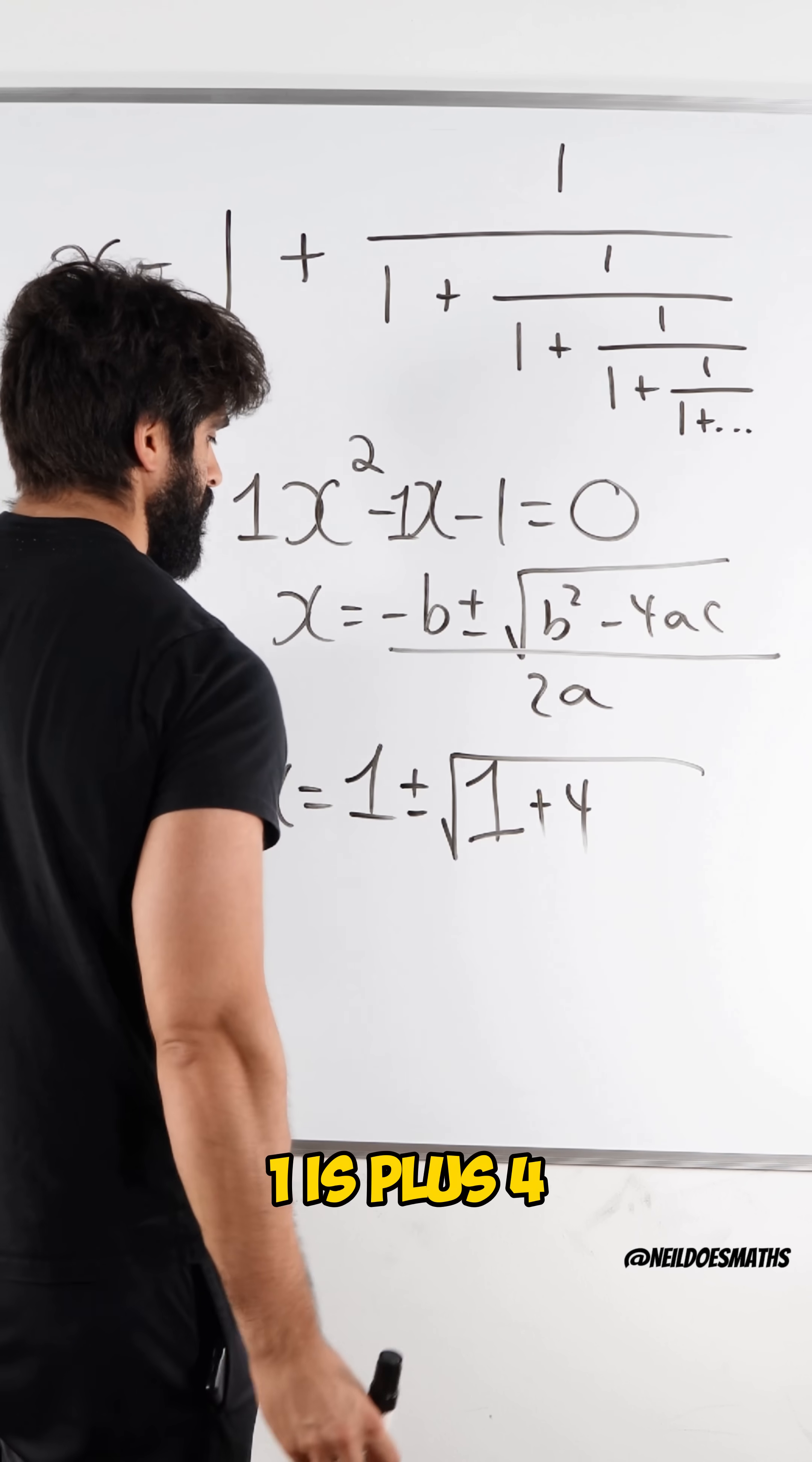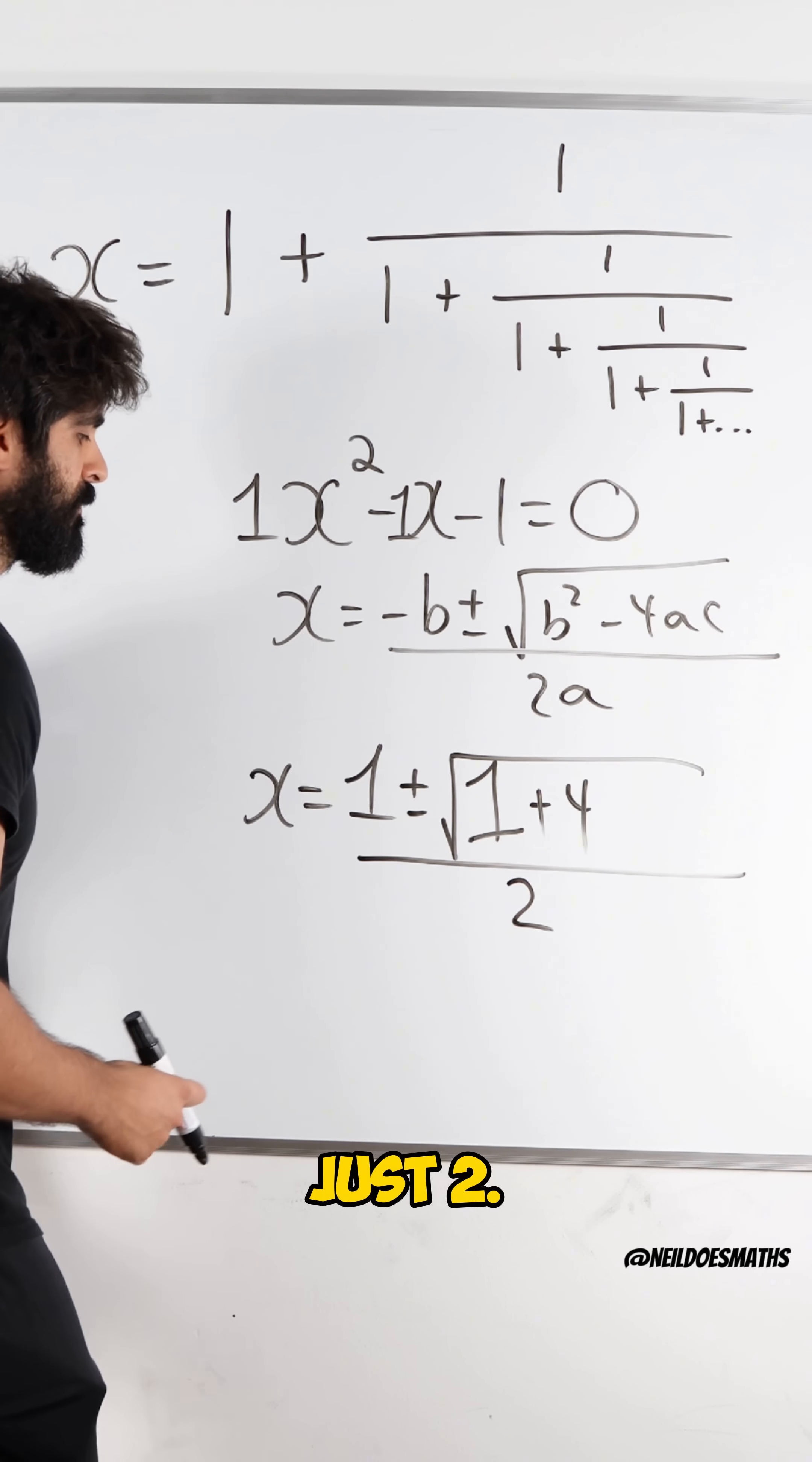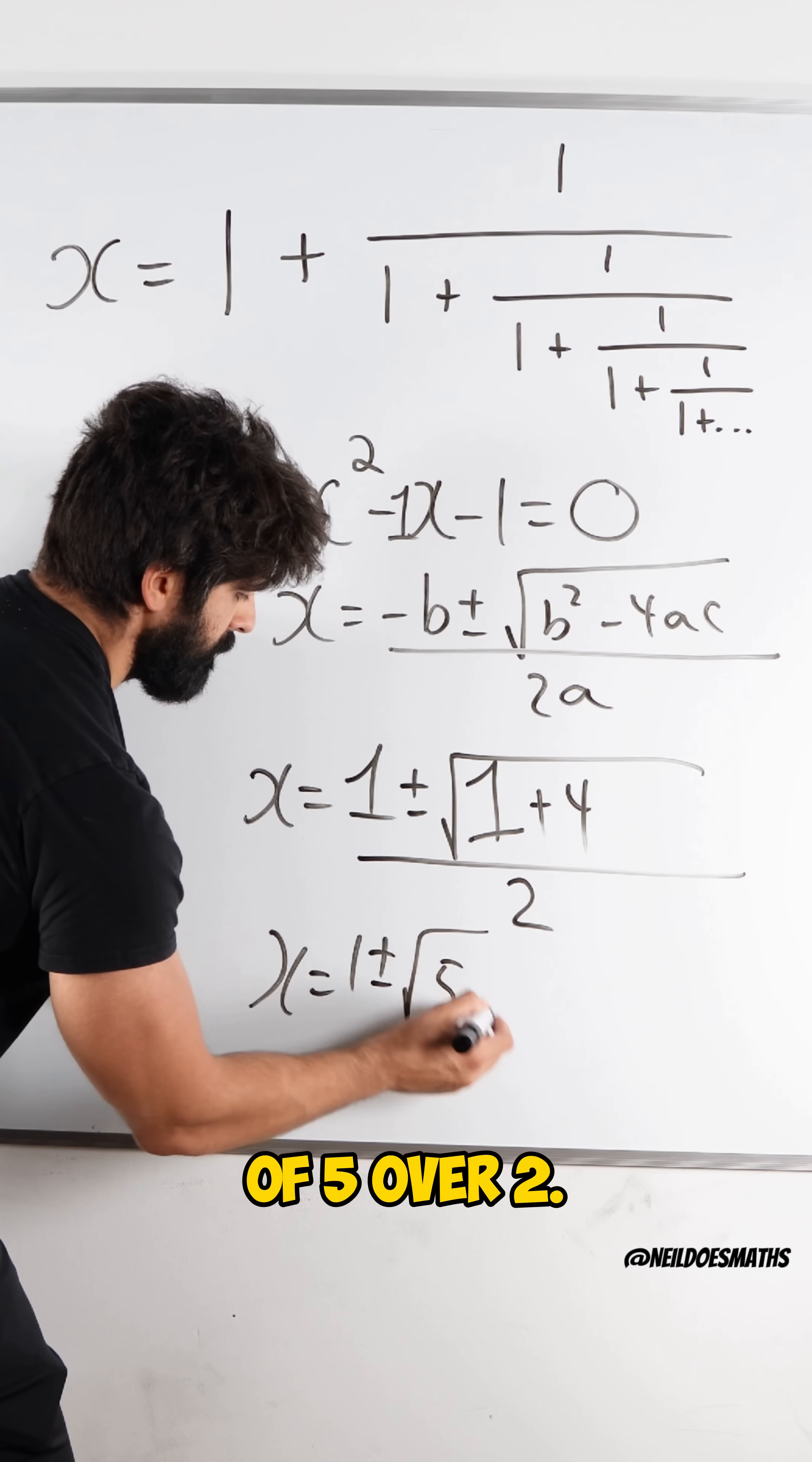All over 2 times a, which is just 2. So we get 1 plus or minus root of 5 over 2.